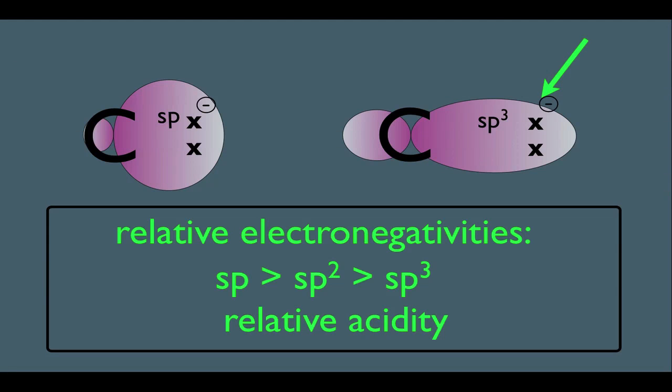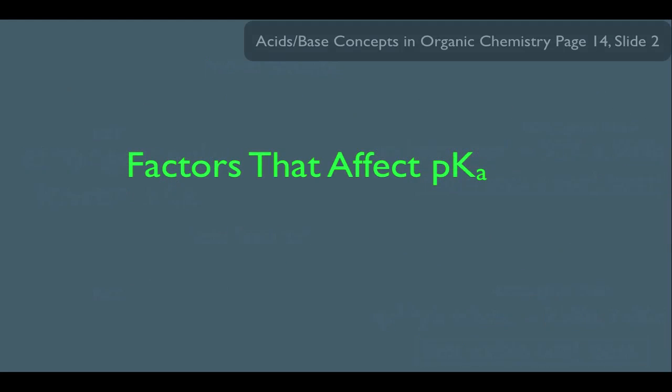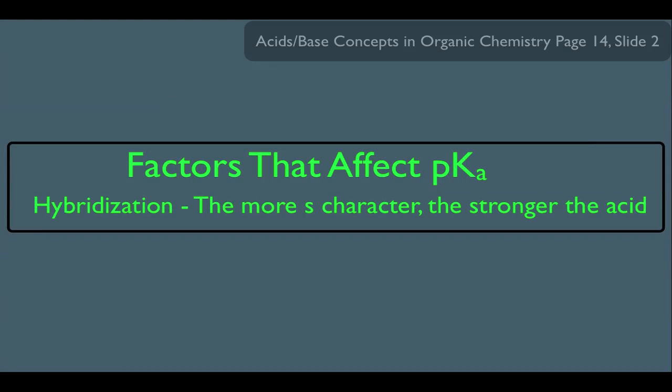So going back to our example here, that's why the top conjugate base is more stable. He's simply more electronegative, therefore the top reaction is more favored. So what have we learned here? We've learned another factor that affects pKa, and that is hybridization. The more S-character, the stronger the acid.